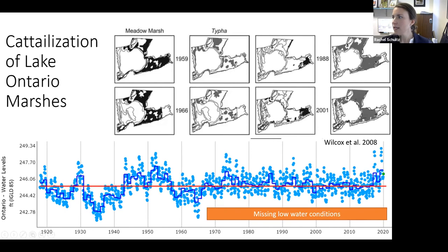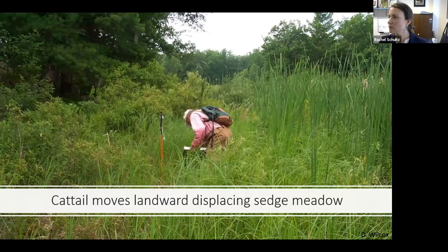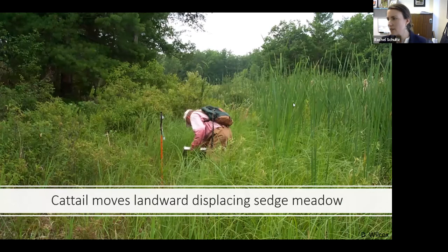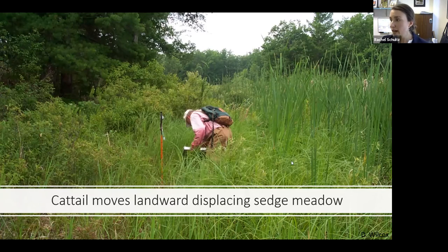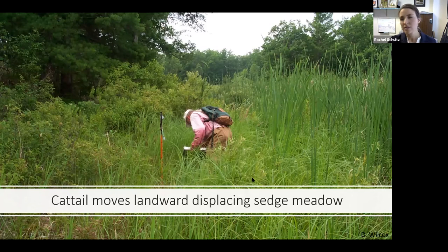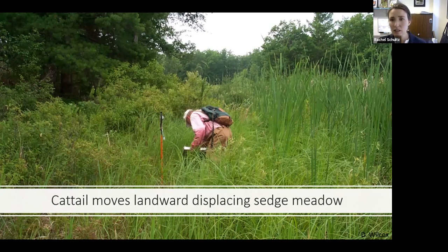We're seeing an expansion of cattail into the previous meadow marsh zones — this is South Cowell Pond on the eastern shore of Lake Ontario. Here we can see the sedge meadow in a narrow band, with cattail moving in and pinning the sedge meadow between the shrub zone and the emergent marsh zone, creating a squeeze and displacing the sedge meadow community. This was seen in a variety of studies, including those by Doug Wilcox and Dr. John Farrell at SUNY ESF looking at upper St. Lawrence wetlands. Cattail was found to increase with higher water levels, causing displacement of the sedge meadow and loss of diversity.